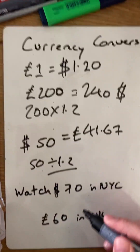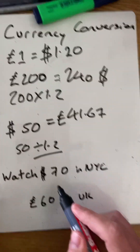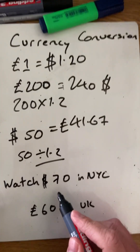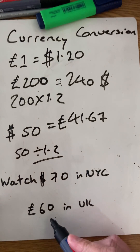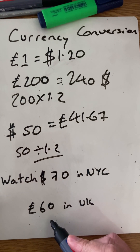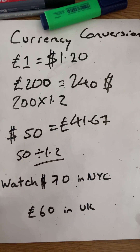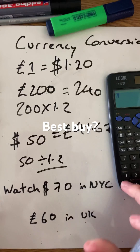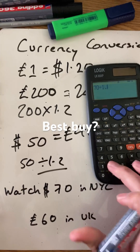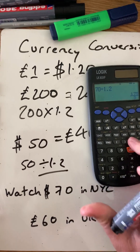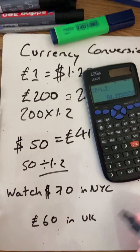Now say you buy a present there — a $70 watch — and you could have bought that for £60 in the UK. Which one would have been cheaper? We do 70 divided by 1.2, which is £58.33, so the American price is cheaper.